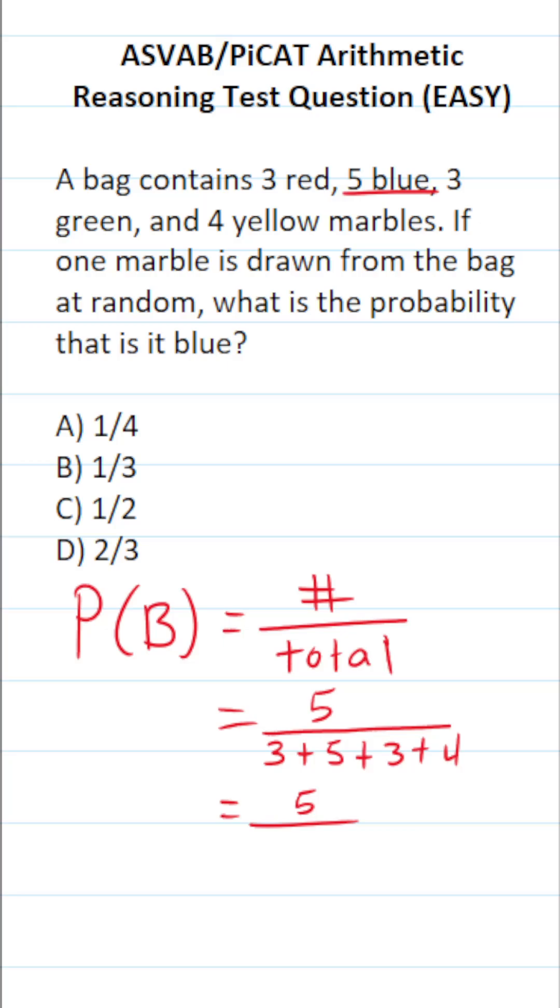So this becomes five over three and five is eight, nine, ten, eleven, and four is fifteen.